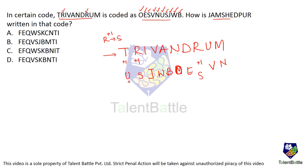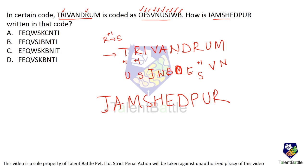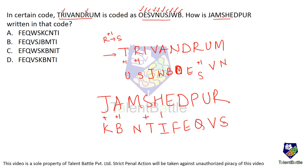So for every letter, we write the next letter, and it is rearranged. For Jamshedpur: J→K, A→B, M→N, S→T, H→I, E→F, D→E, P→Q, U→V, R→S. Checking options: there is no W, so cancel those options; there is no J either, so that gets cancelled. The answer is option D. We verify: F, E, Q, V, S, K, V, I — checking B, N, T, I — answer confirmed as option D.